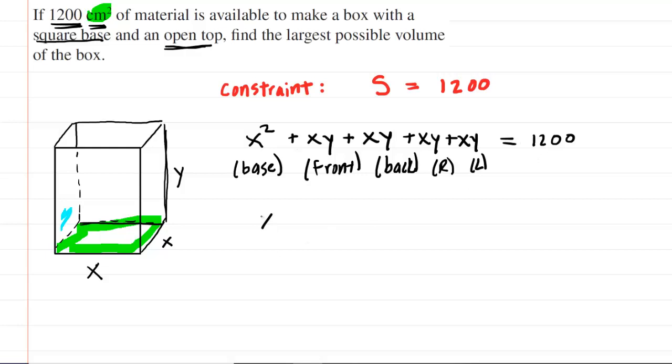Let's condense this into a much simpler expression. We have X squared plus 4XY, and this will be set equal to 1,200. And this is what we call the constraint equation.